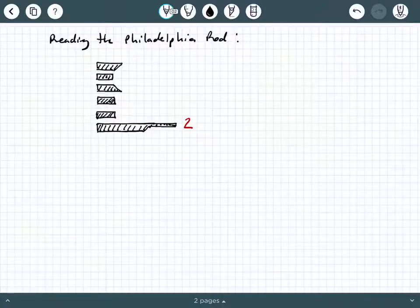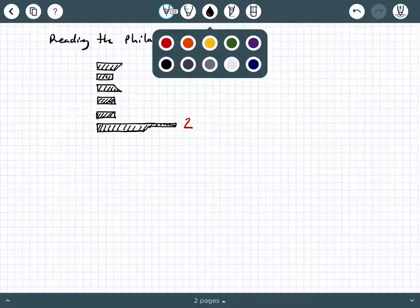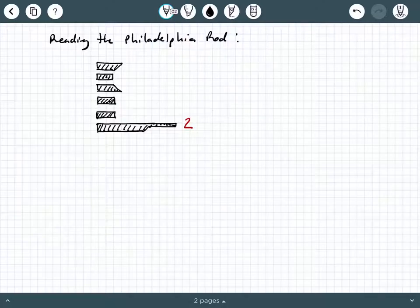So in this short video, we're going to go over how specifically to read the Philadelphia rod. In other videos, I've mentioned that when you look at the Philadelphia rod through the scope, you see these very thick black shapes that are essentially tick marks, and they're different shapes. So here I've already drawn several examples of those shapes.